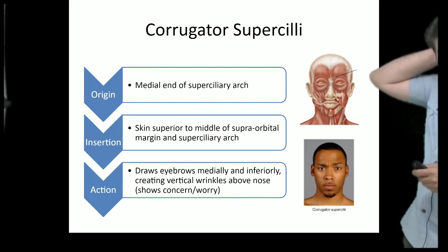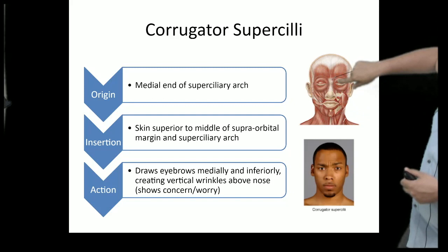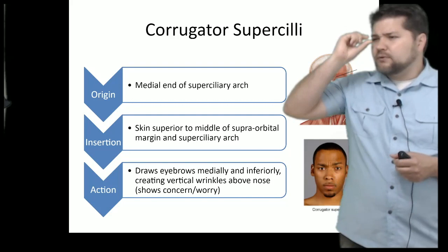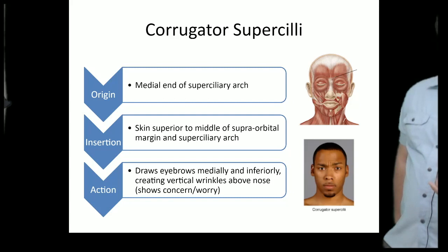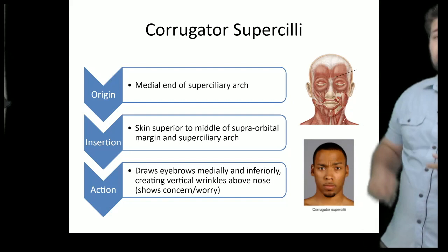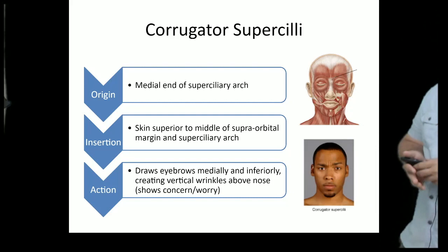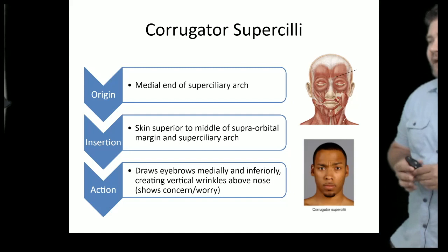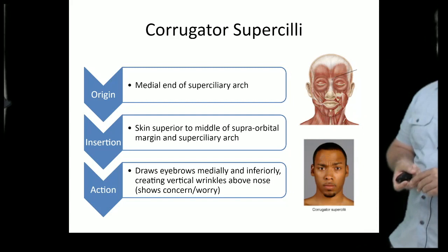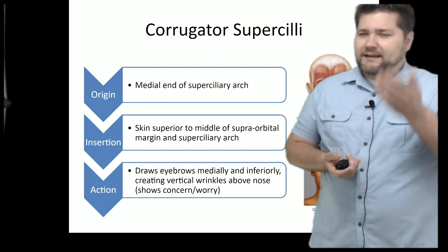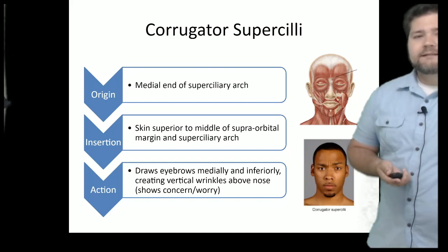The corrugator supercilii is located on the medial aspect of the eye and helps raise the medial component of the eyebrow. It gives that skeptical, worried, or concerned look — especially when done on one side. A good mnemonic: 'supracilii' sounds like 'super silly.' If somebody does something super silly, you kind of raise your eyebrow in disbelief. Both sides together contribute to the surprised look alongside the frontalis.